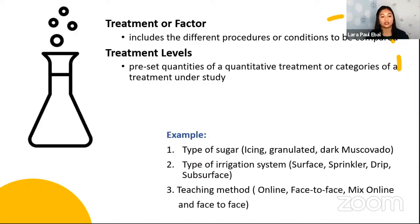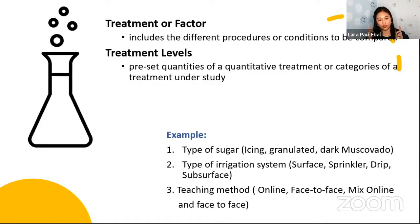These procedures or conditions are your treatment levels — the preset quantities of a quantitative treatment or categories of a treatment under study. For example, if you want to compare different types of sugar in terms of sweetness when applied to cakes, the types — icing, granulated, and dark muscovado — are your treatment levels.